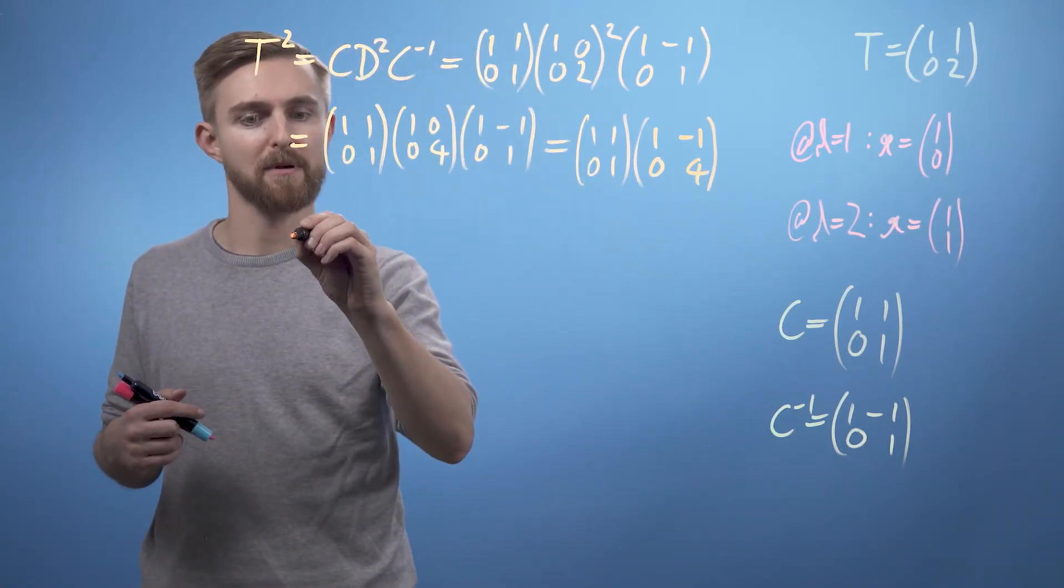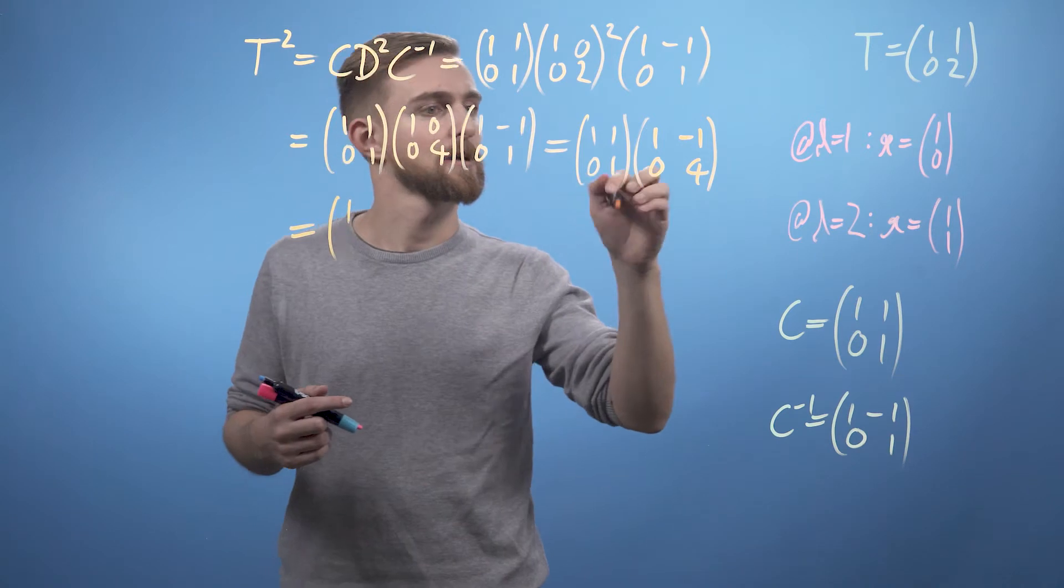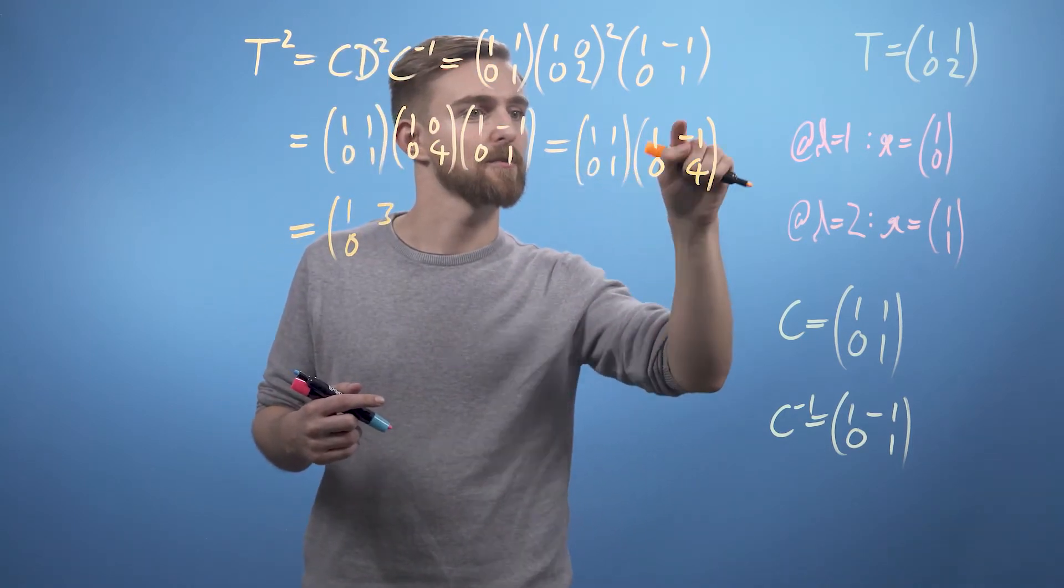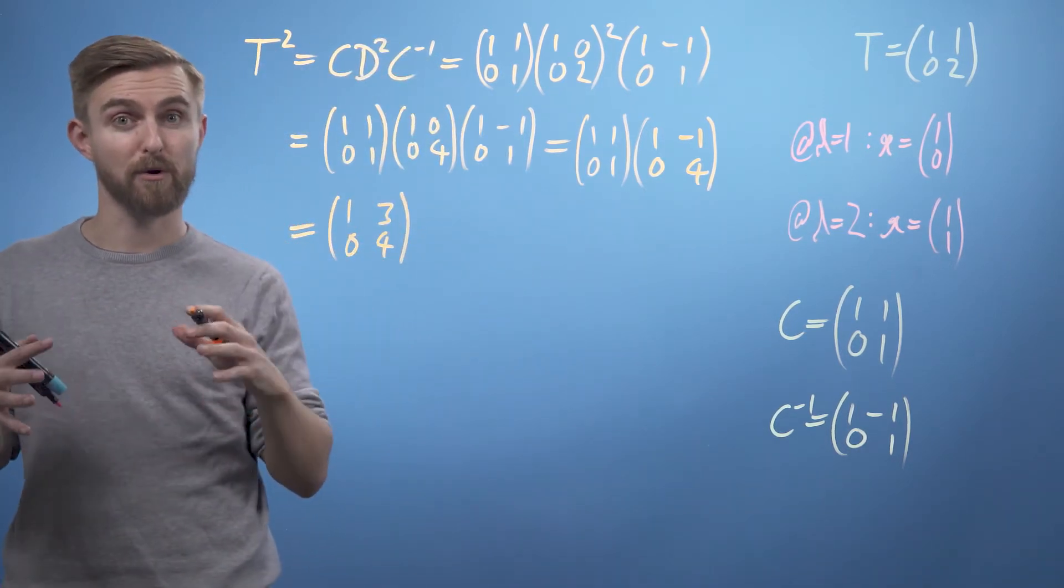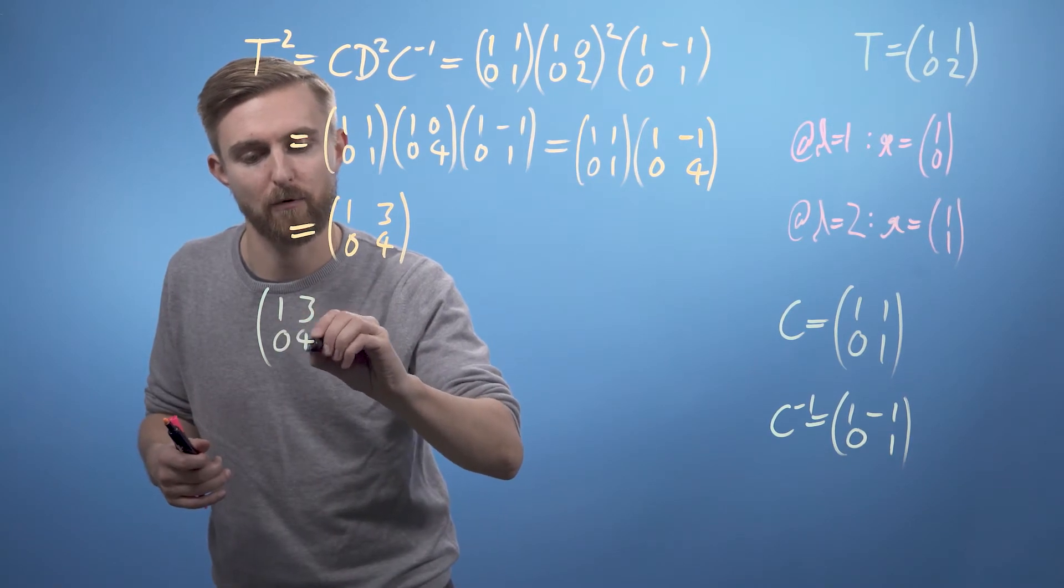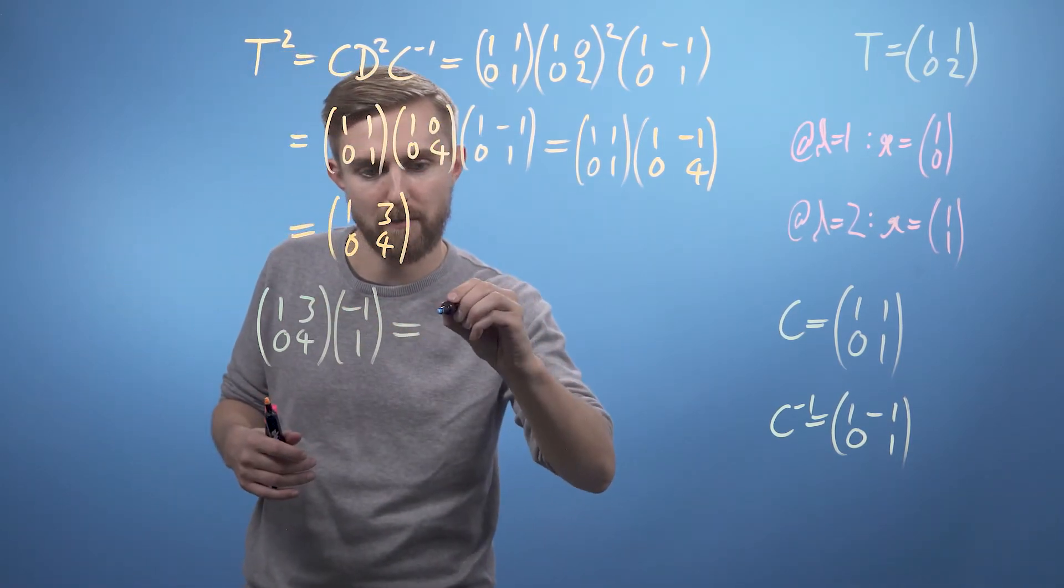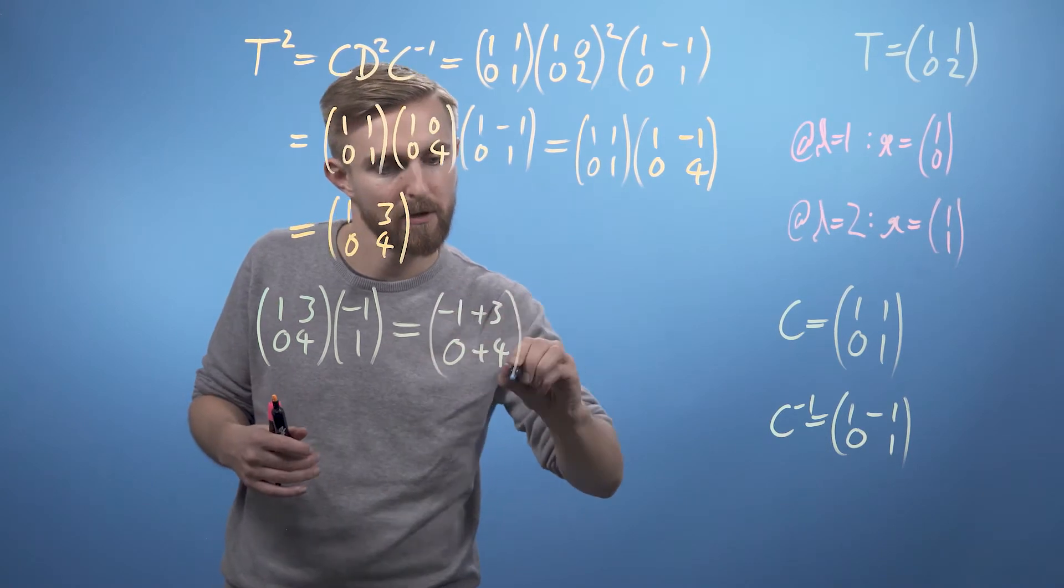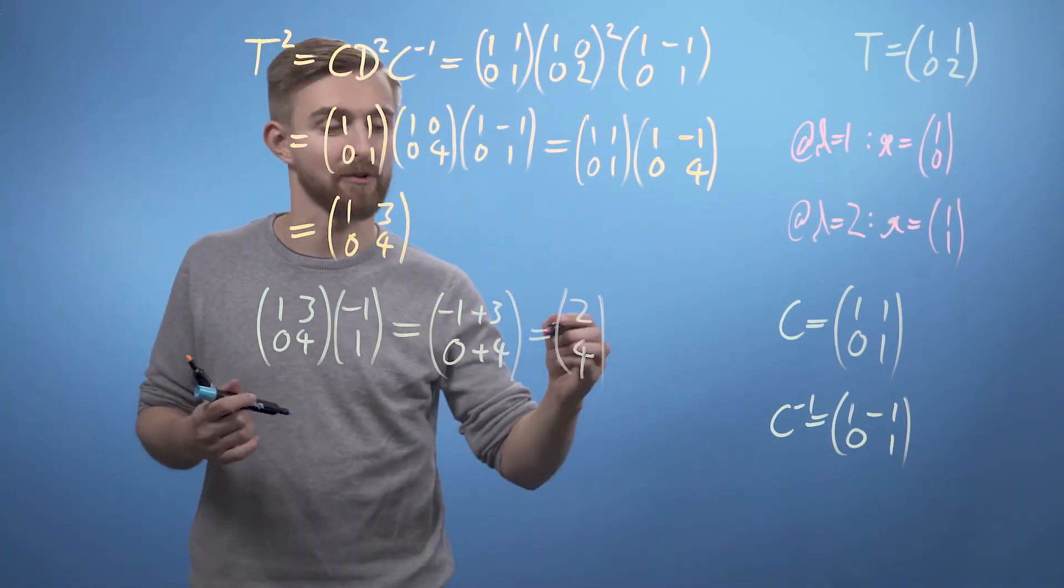Okay, and then working it through one more step, we're going to see that we get first row first column 1, second row first column 0, first row second column is 3, and second row second column is 4. And applying this to the vector (-1, 1), we're going to get (1, 3; 0, 4) applied to (-1, 1) is going to be rows times columns, so -1 plus 3 and 0 plus 4, which equals (2, 4). Which, pleasingly enough, is the same result as we found before.